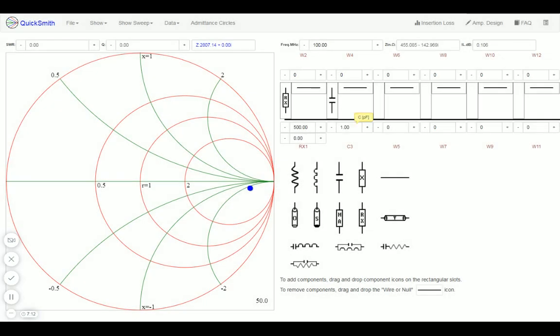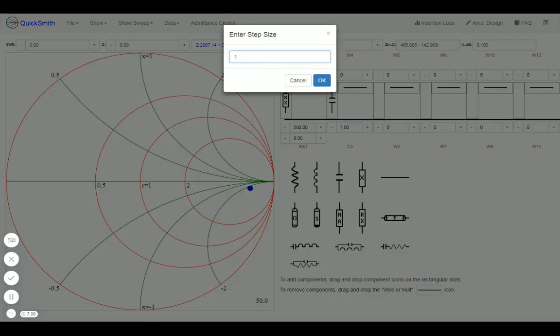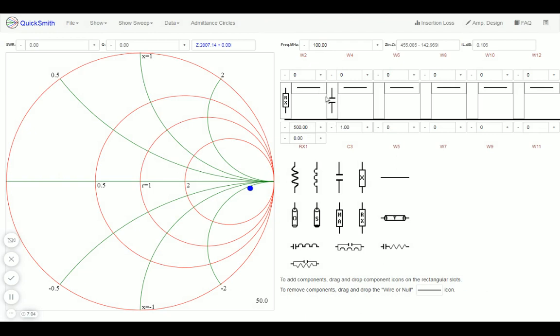You change the step size of the spin button by double-clicking it. Now the capacitance is increased until you reach the constant resistance of one line, which is a 50 ohm constant resistance line.